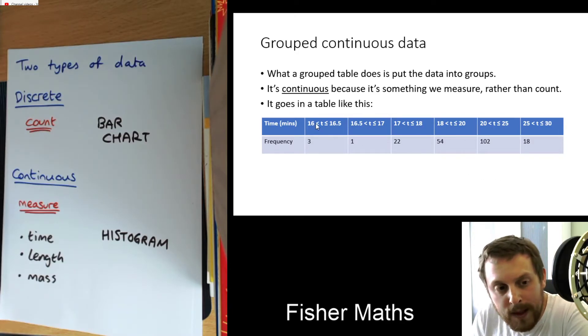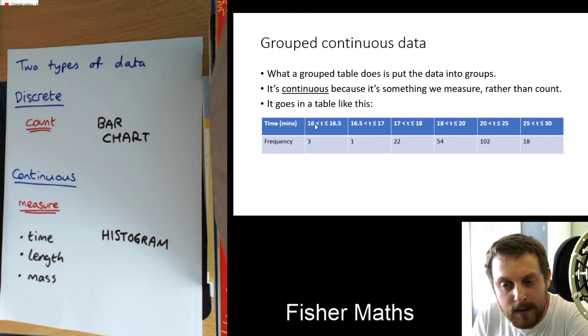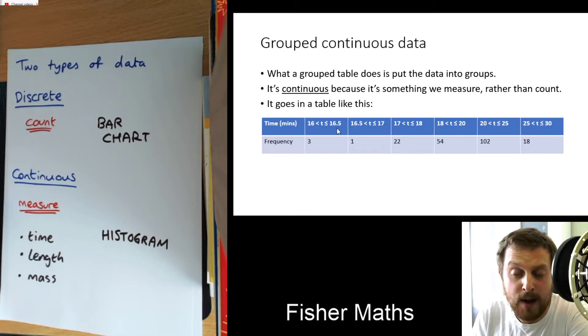And then what these symbols mean is the time has to be greater than 16, but less than or equal to 16 and a half. So to put that more simply, this is anyone who got between 16 and 16 and a half. But it doesn't include 16. But because of this line here, it does include anyone who got 16 and a half.